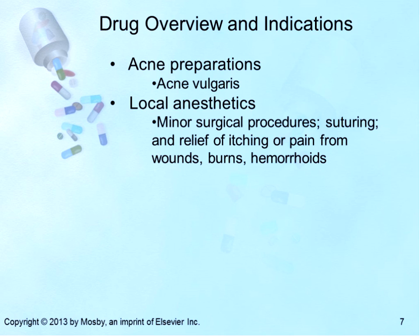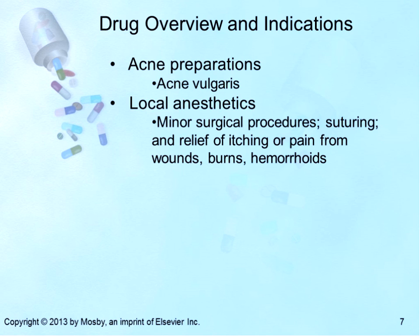For acne, there are both topical and oral preparations. Local anesthetics are indicated for minor surgical procedures, suturing, and relief of itching or pain from wounds, burns, or hemorrhoids. Local anesthesia does not depress the patient's level of consciousness, making its use much safer than general anesthesia. Local anesthetics may be applied as a powder, gel, lotion, ointment, spray, or injection into a small area. If a larger area requires anesthesia, a nerve trunk such as epidural or spinal, or a single nerve, may be injected to provide regional anesthesia.